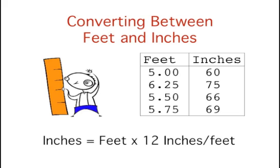This table shows the heights of five people measured in both feet and inches. To transform feet to inches, you multiply the number of feet by 12. For example, 5 feet times 12 inches per foot equals 60 inches.